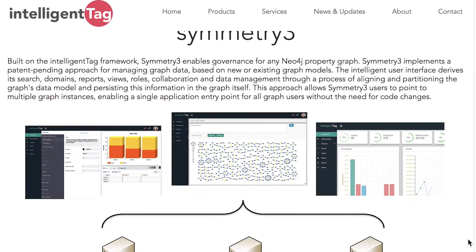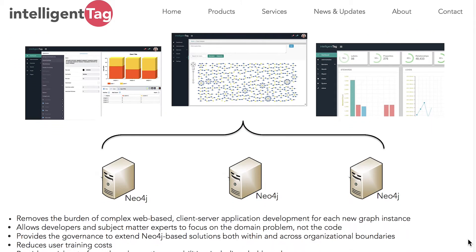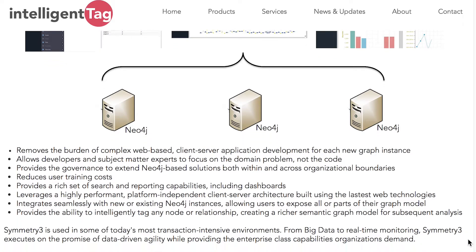My name is Joe Stefaniak. I am the CEO of IntelligentTag. Our product offering is called Symmetry 3, and what Symmetry 3 does is interpolate your existing graph models to provide a level of governance around that model to help you penetrate an enterprise.